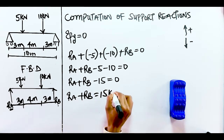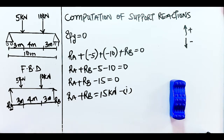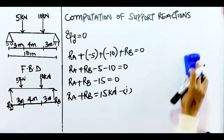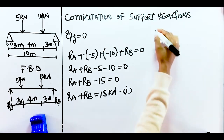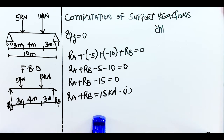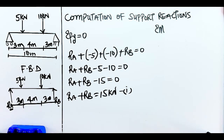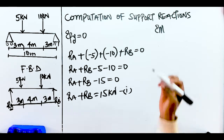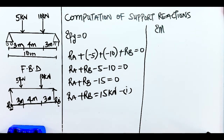Moving on to summation of moments — we can take moments about any support. In the previous lesson we took moments about RA and substituted the value for RB into Equation 1. But in this lesson I'm going to take moments about both supports so we can do a check to verify whether we are correct.